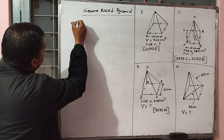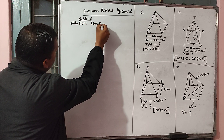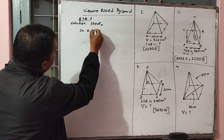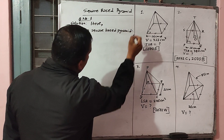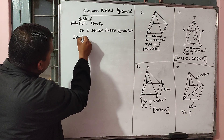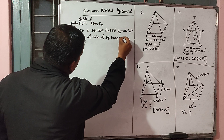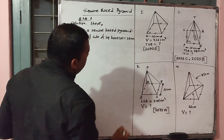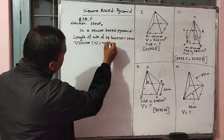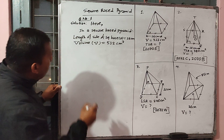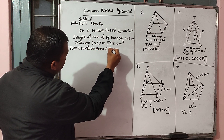Let's start question number 1. It's a square base pyramid. Length of side of square base A equals 16 cm. Volume of pyramid V equals 512 cm cubed. We need to find total surface area T.S.A. equals?